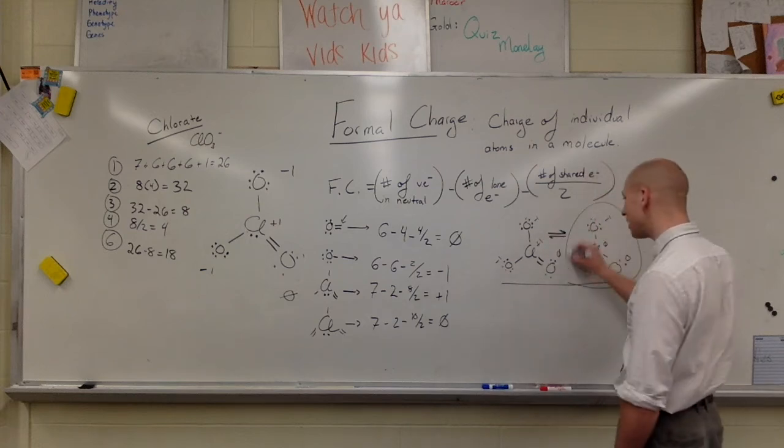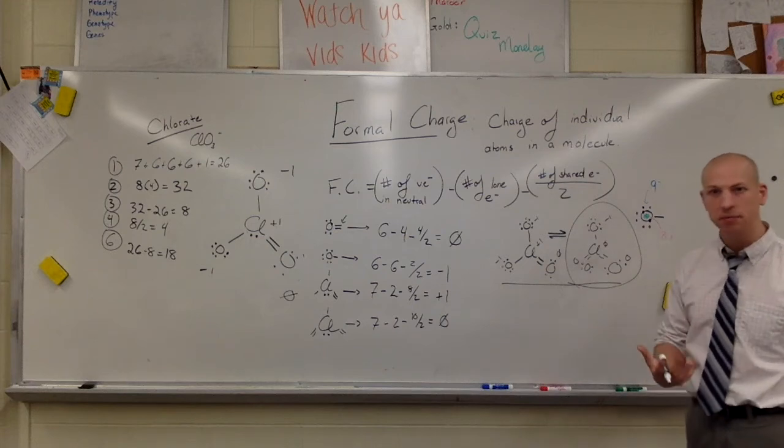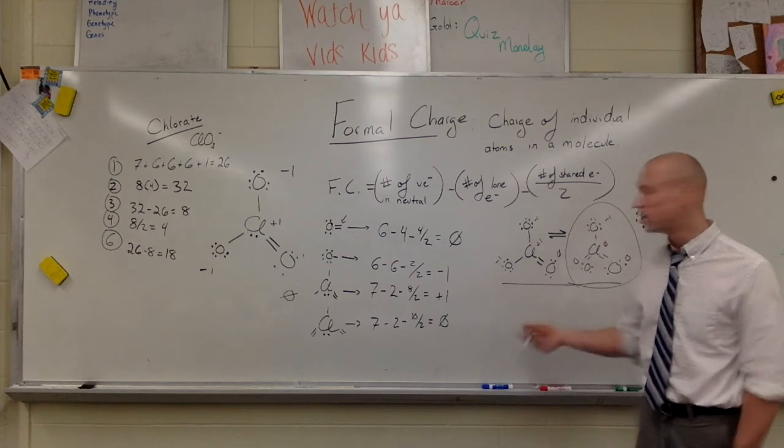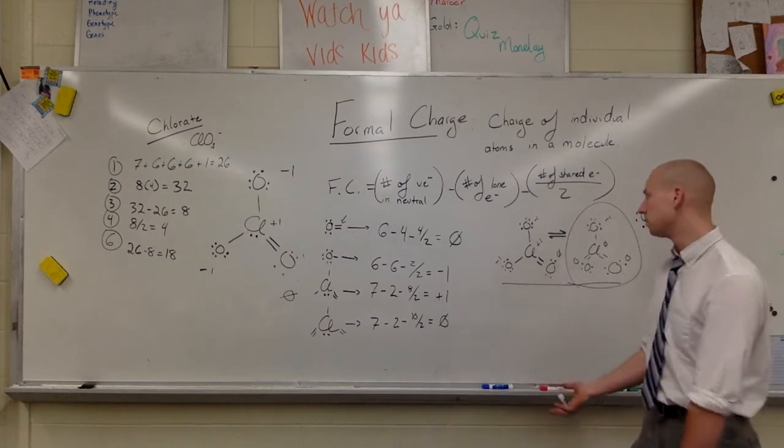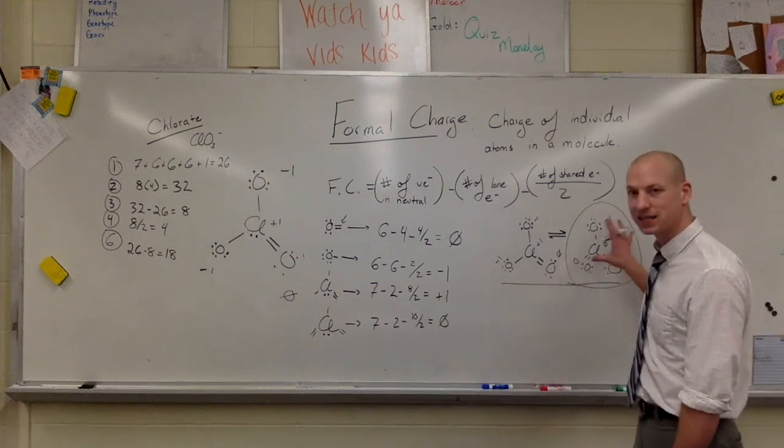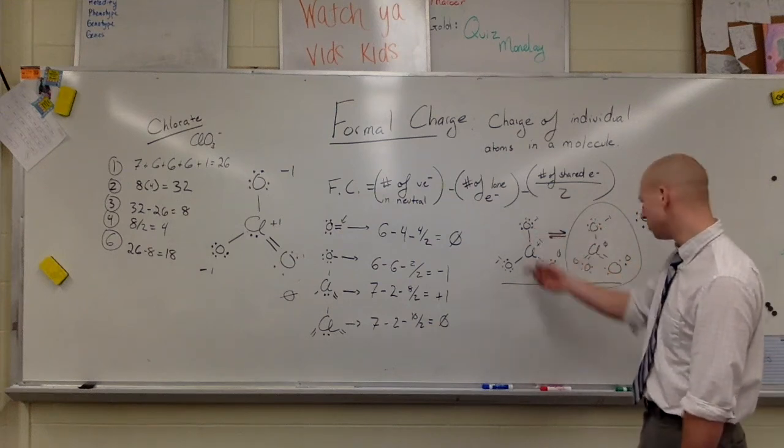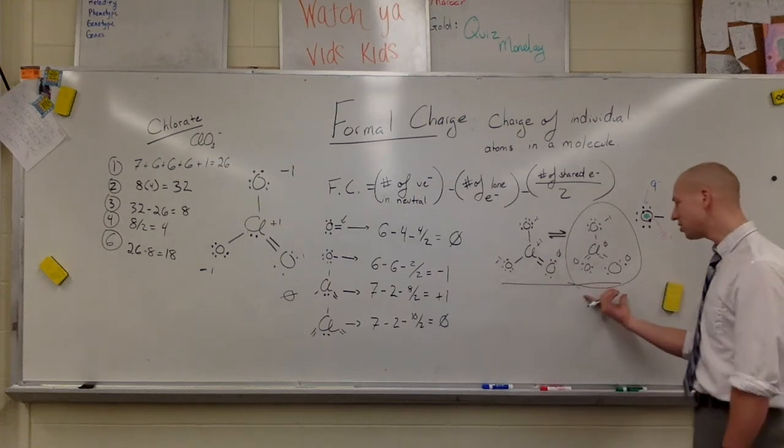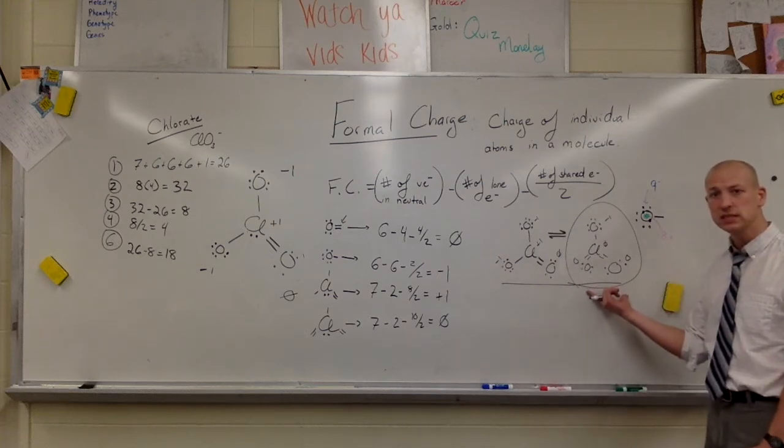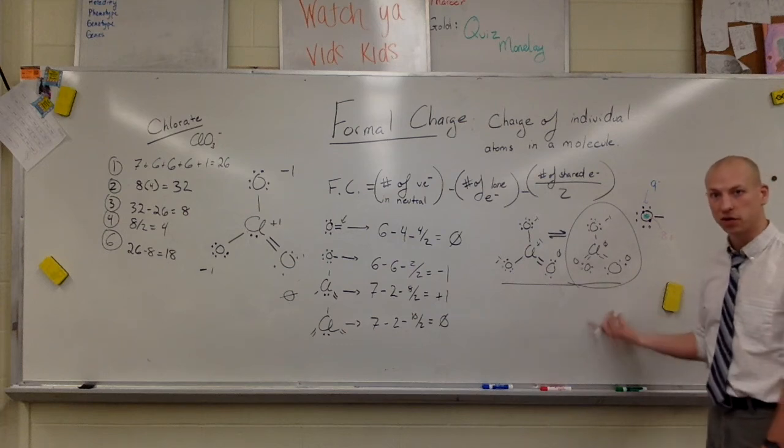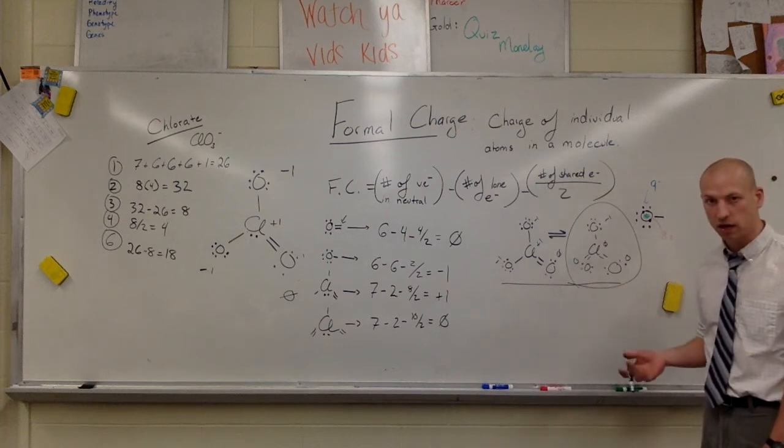This compound ends up being the more stable of these two resonant structures. That doesn't mean that this doesn't exist. This exists sometimes. The oxygen is electronegative enough to pull that electron over and kind of hoard it for a little while, and then it will bounce back into this shape, and these double bonds will bounce around. But really, if we calculate out the formal charge for each of these, then we can figure out the most stable, the most common occurring resonant structure of this particular compound.